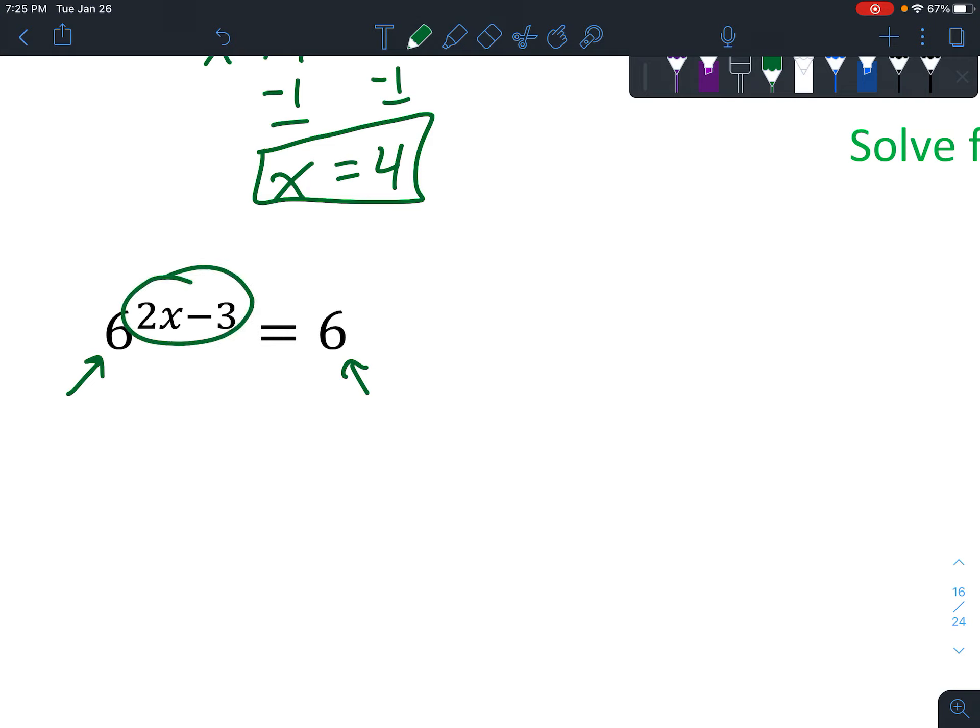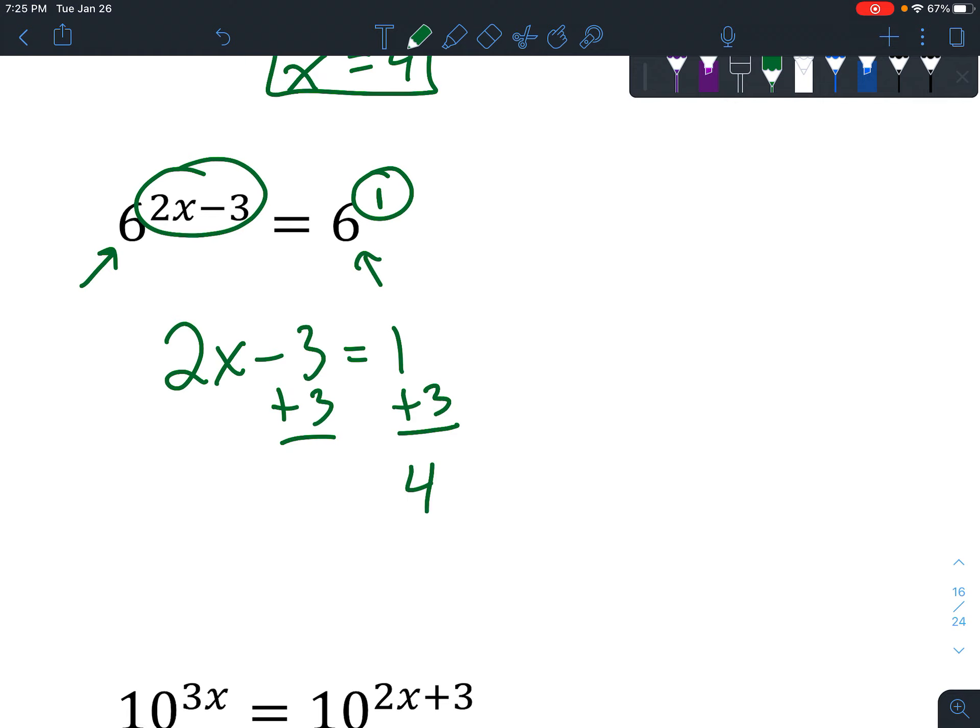So this has to equal... wait a second, where's the exponent? If you don't see an exponent, put a 1 there. So 2x-3 = 1, and solve it just like you'd solve any regular equation. Inverse operations: divide by 2, X = 2.